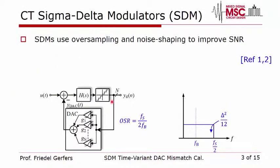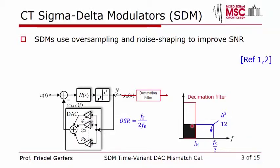Sigma-Delta ADCs consist of a feedback loop with a multi-bit or single-bit quantizer that noise-shapes the quantization noise. Sigma-Delta benefits from two features: oversampling and noise shaping. Due to oversampling, the quantization noise is spread over the whole Nyquist range so the decimation filter filters out most of the noise, leaving only the error shown here in black in the passband.